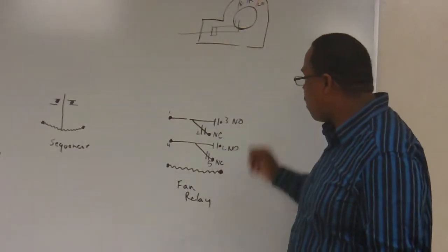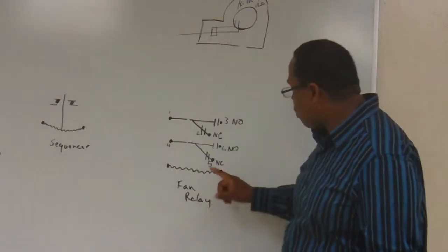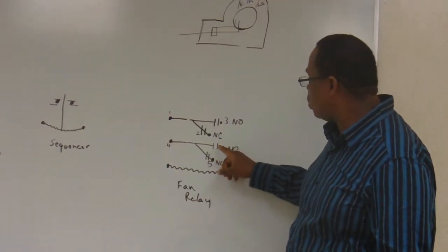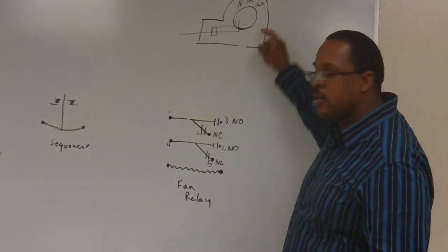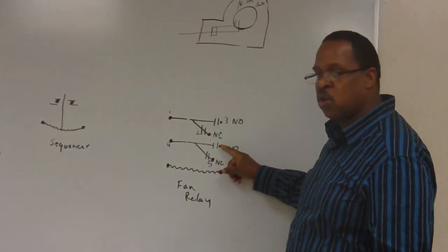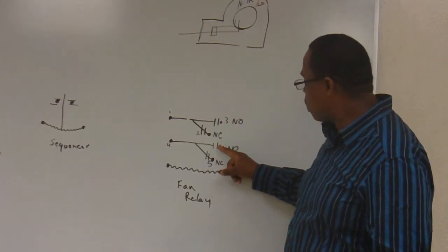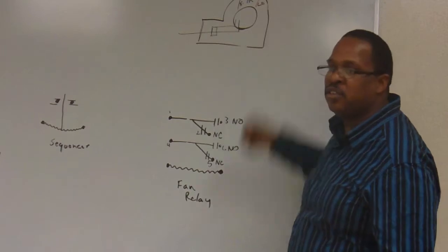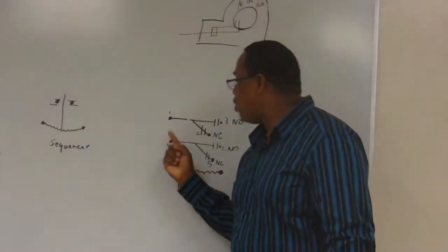For example, if I want to pass power to the fan and I send power to five and then I put power on six to go to the fan, it will never get there because this is closed, this is open. When you energize, this is closed and this is open and you do the opposite. Power will never make it to the fan.